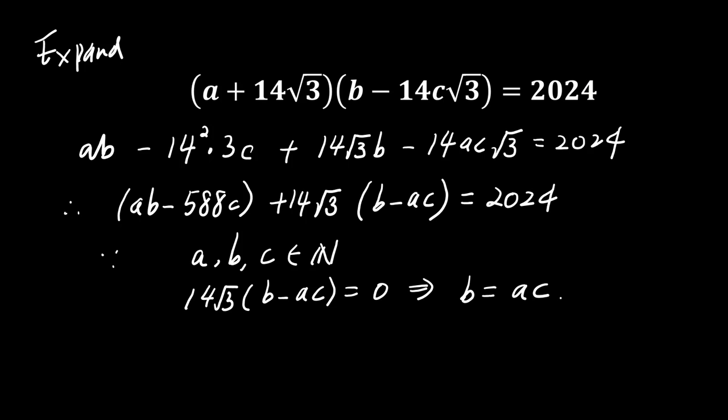Condition 1, a times b minus 588c equals 2024 from the rational part and condition 2, b equals a times c from the irrational part. From the second condition, b equals a times c.